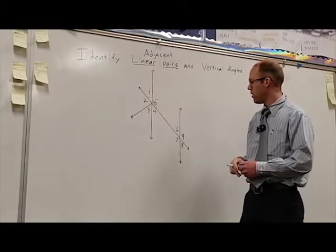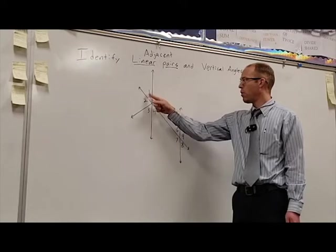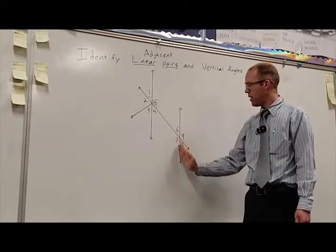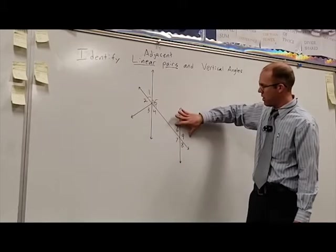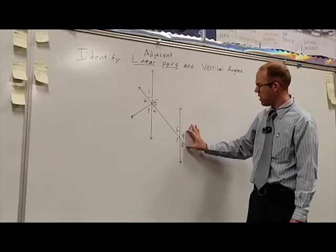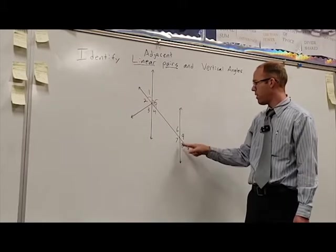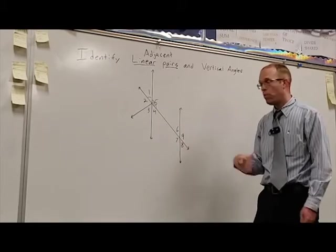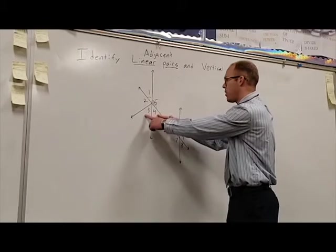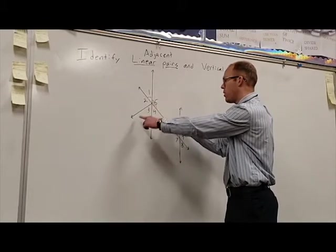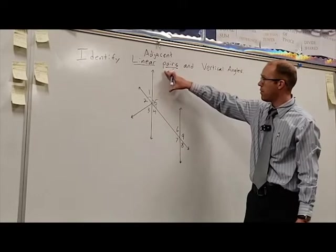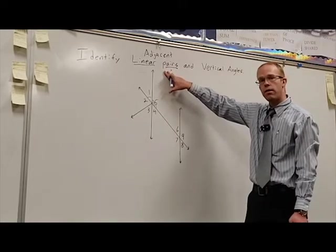So there are a couple of different answers for this one. We have angle one and five that form a straight line. Angle six and seven together make this straight line right there. Six and nine together make this straight line. Nine and eight. Seven and eight. Those are all linear pairs right here. An example that wouldn't be a linear pair would be maybe three and four, because when we put those two together, it's not a straight line right there. So lots of different answers to identifying linear pairs.